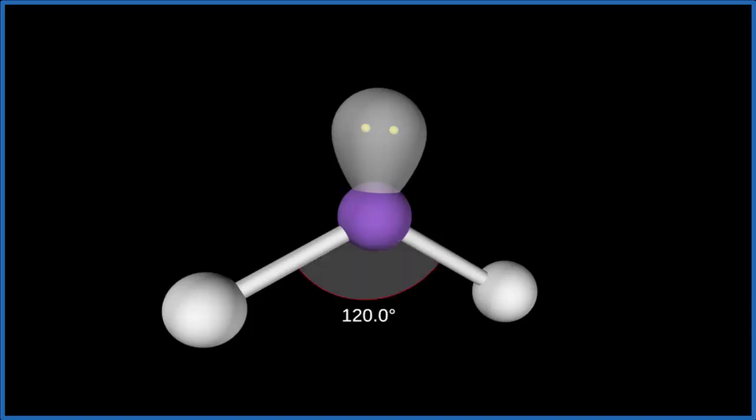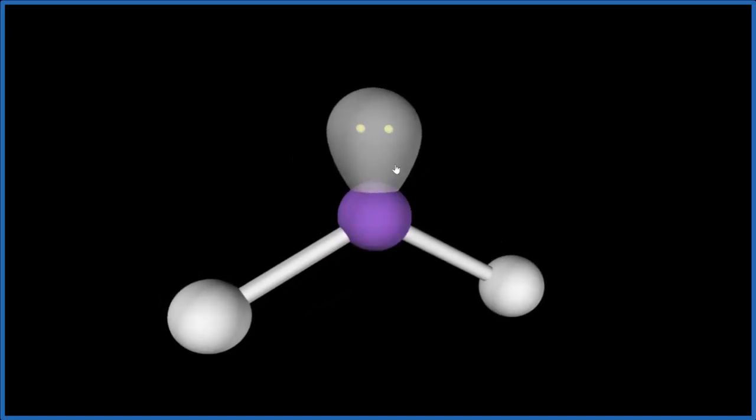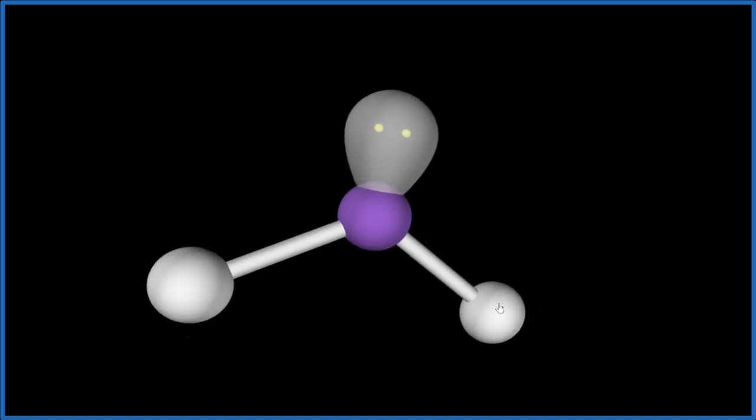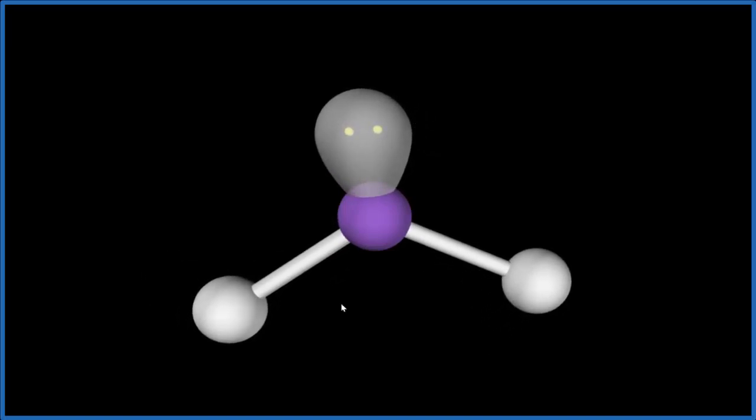The ideal bond angles would be 120 degrees. But because we have this lone pair, which is more repulsive than the chlorine atoms, it pushes them closer together. The actual bond angle is about 109 degrees. So the molecular geometry is bent.